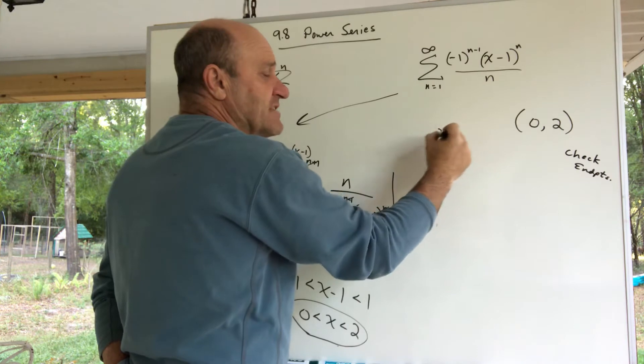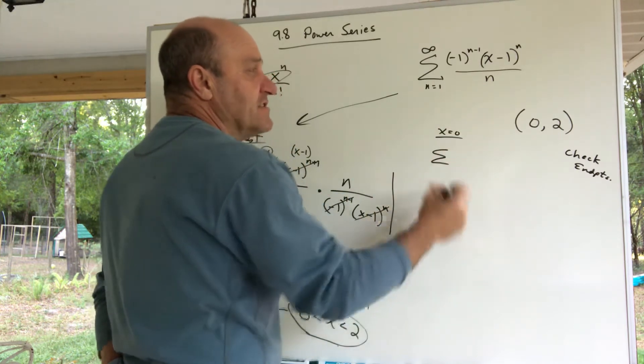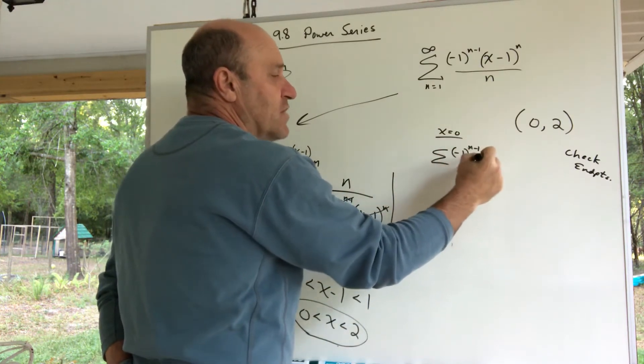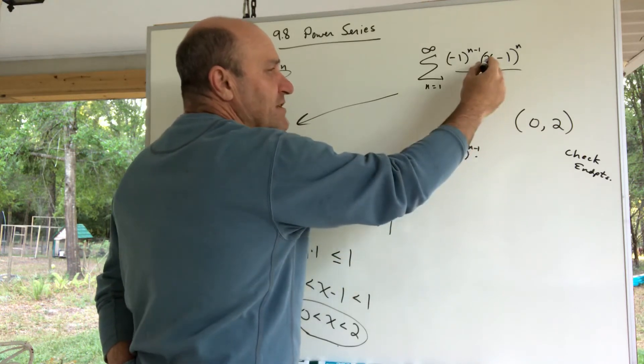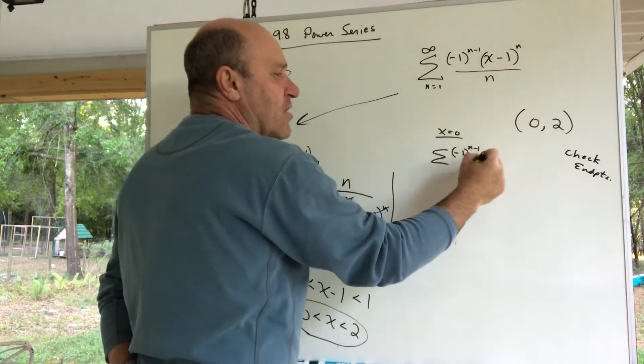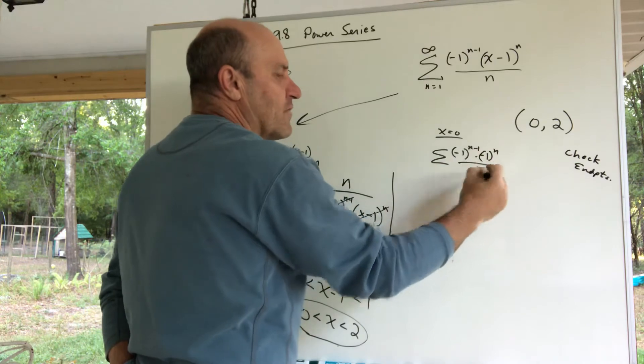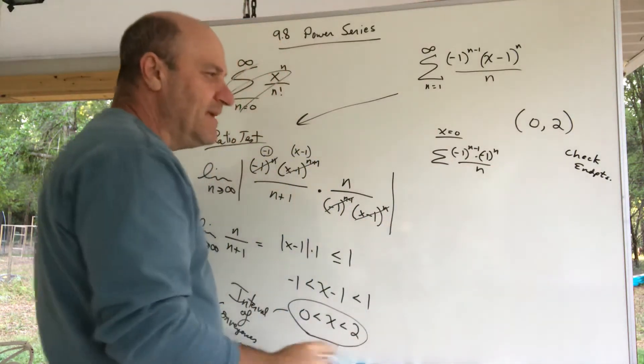So if I'm checking x equals 0, I'm now this series: negative 1 to the n minus 1. What I do—plug in a 0 for x—so that's a negative 1 to the n all over n.